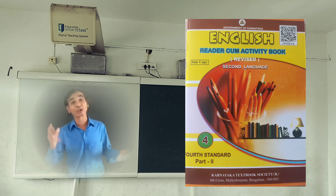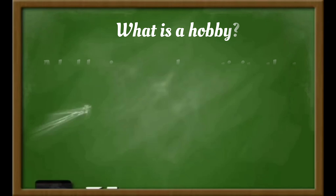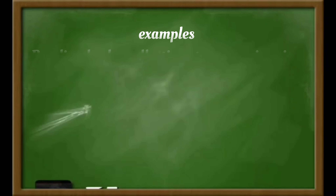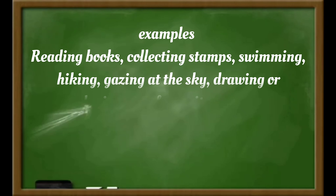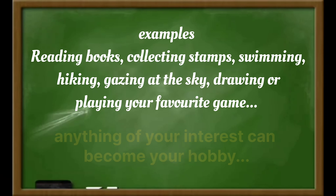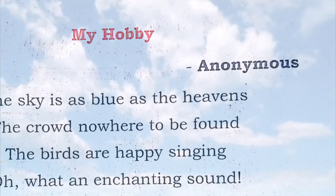Welcome to Class 4, Unit 5: Hobbies. What is a hobby? A hobby is a regular activity that is done for enjoyment, typically during one's free time. Examples of hobbies: reading books, collecting stamps, swimming, hiking, gazing at the sky, drawing, or playing your favourite game. Anything of your interest can be a hobby. Let's begin: My Hobby Anonymous.